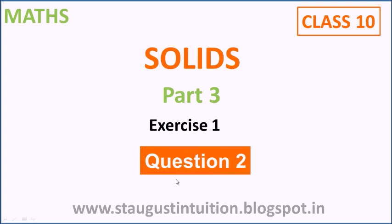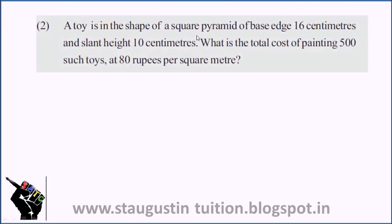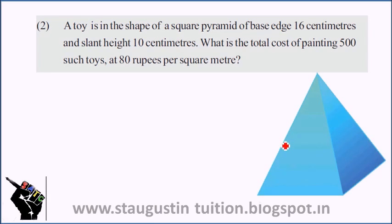Exercise 1, question number 2: A toy is in the shape of a square pyramid with base edge 16 cm and slant height 10 cm. What is the total cost of painting 500 such toys at 80 rupees per square meter? The base edge is 16 cm, denoted by letter A. Slant height is 10 cm.